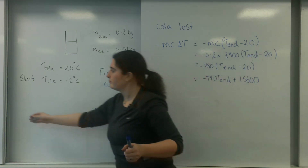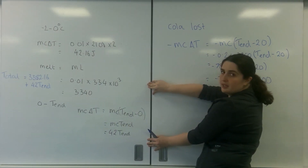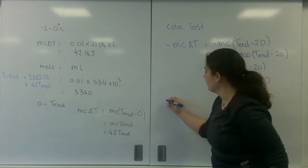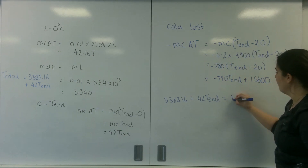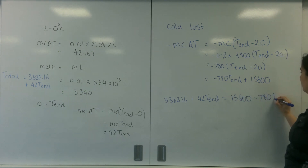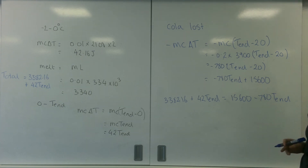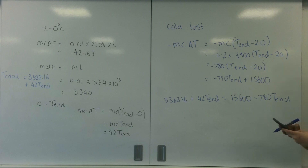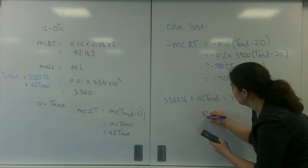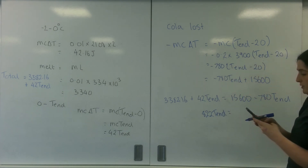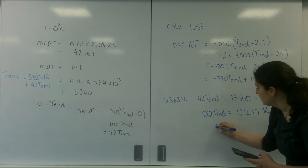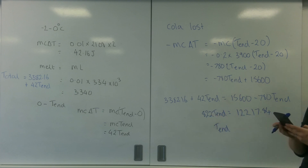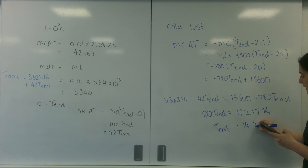So the energy formula for the cola lost equals the energy the ice gained: 3382.16 plus 42 T-end equals 15600 minus 780 T-end. Moving terms: 780 plus 42, so 822 T-end equals 15600 minus 3382.16, which is 12217.84. Therefore T-end equals 12217.84 divided by 822, which is 14.86 degrees C.